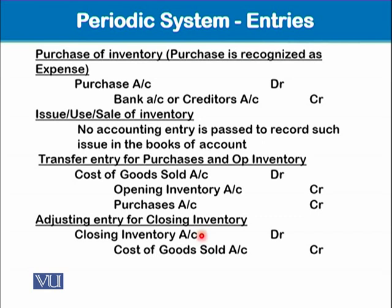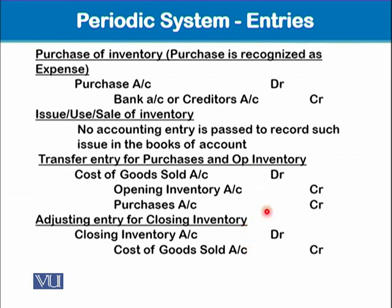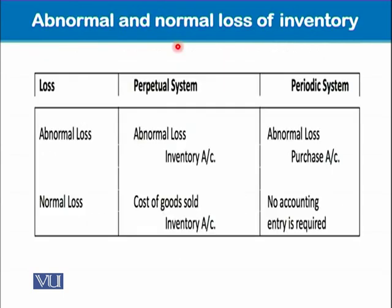What we have already learned in earlier accounting modules was based on the periodic system, where a purchases account entry was passed for each purchasing transaction. When we prepared the trading account, we added opening inventory and purchases and subtracted closing inventory — these accounting entries are the base of the accounting treatment used in usual accounting practices of small-sized businesses.